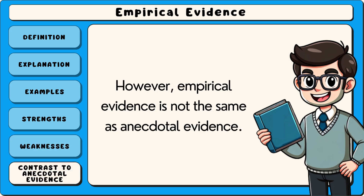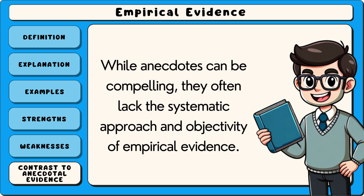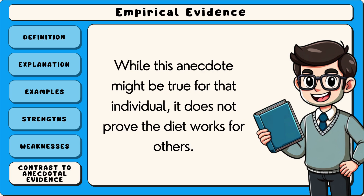Empirical evidence is not the same as anecdotal evidence. Anecdotal evidence consists of personal stories or isolated examples, which may not represent the larger picture. While anecdotes can be compelling, they often lack the systematic approach and objectivity of empirical evidence. For example, someone might claim that a specific diet cured their headaches based on their personal experience. While this anecdote might be true for that individual, it does not prove the diet works for others.